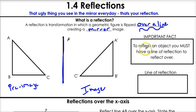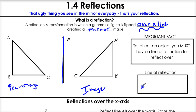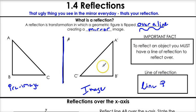To reflect an object, you must have a line of reflection to reflect over. In this case, our line of reflection was line P. You must always have a line of reflection to reflect over, or you can't do a reflection. You'll see how important that is in the lesson.